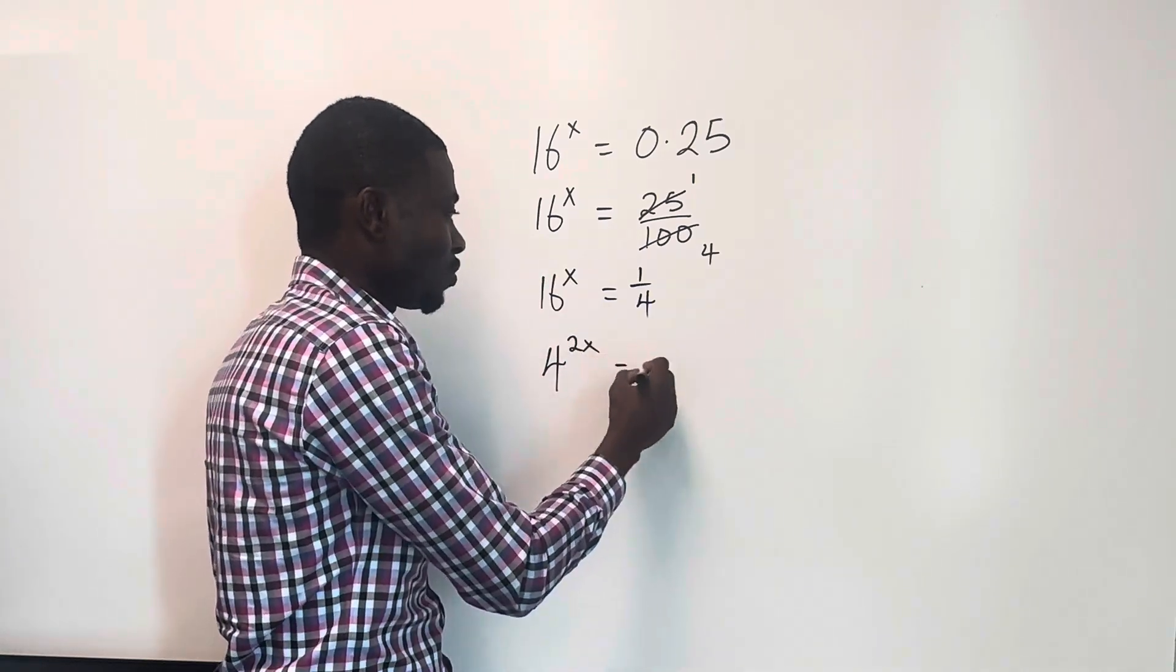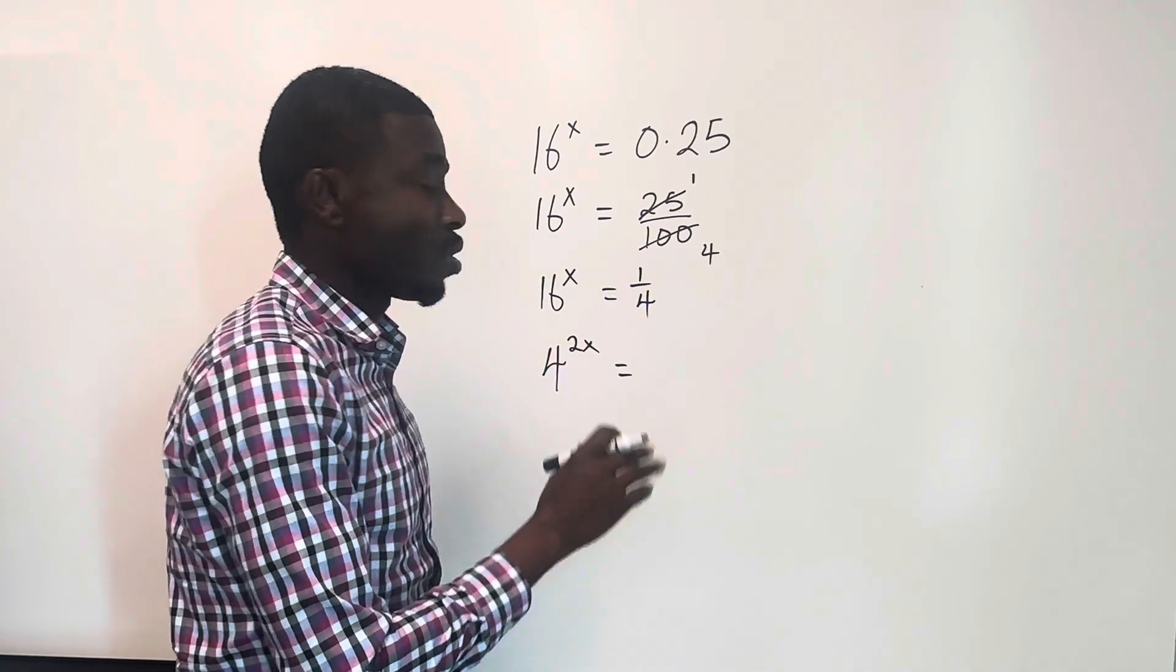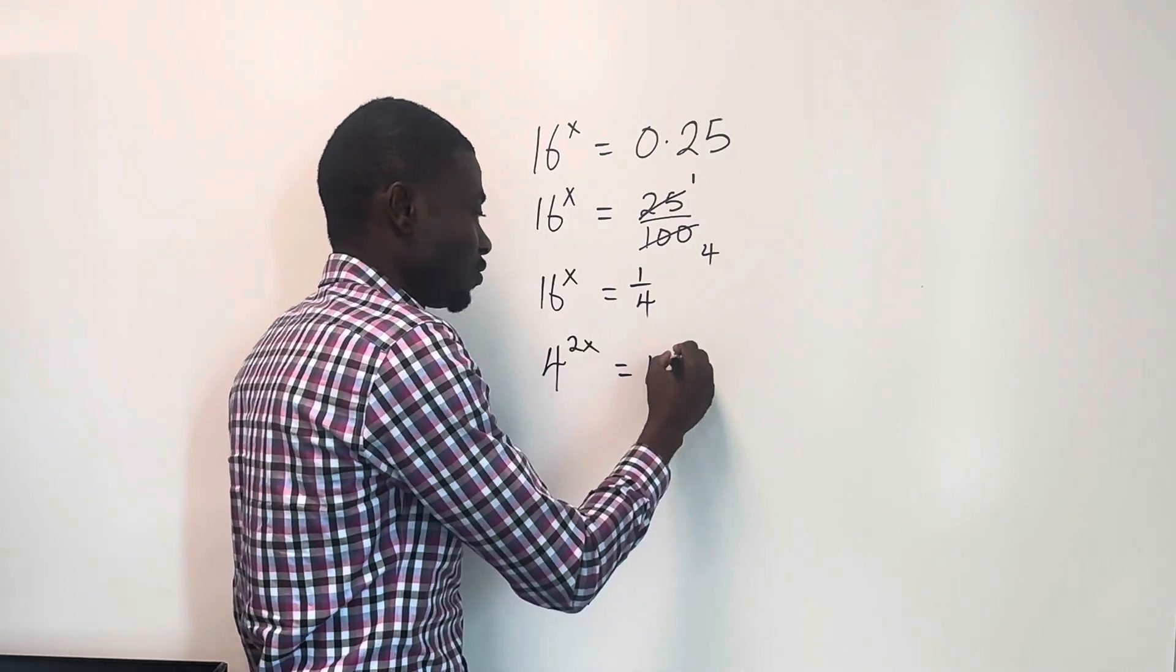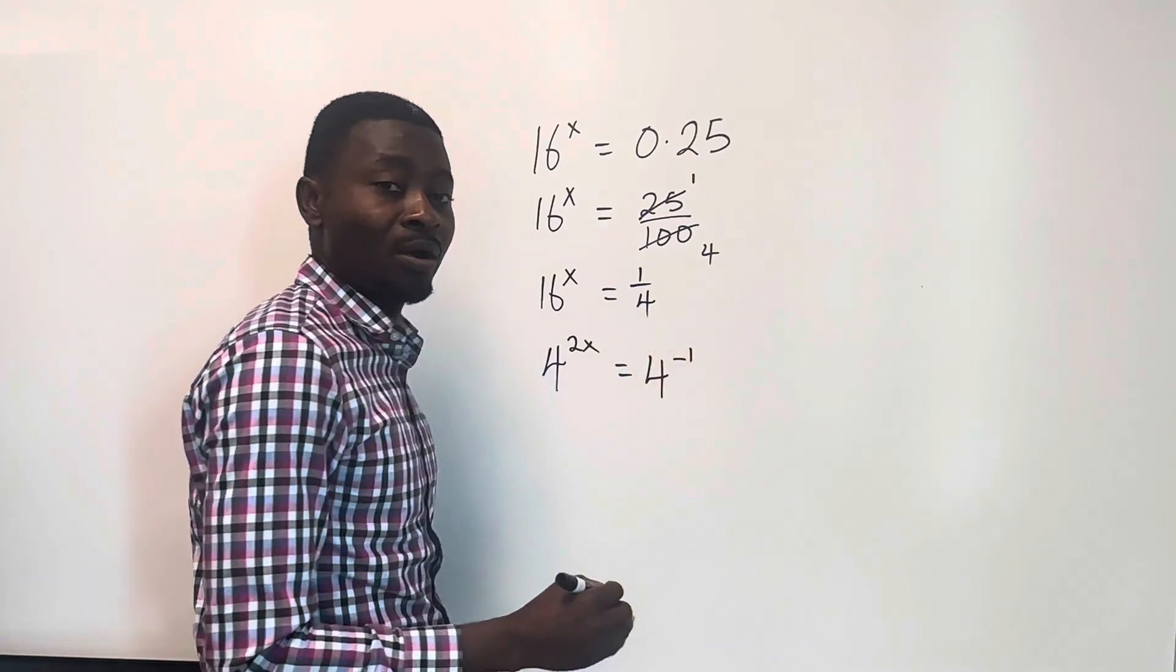So raised to the power of... we have the x here. Now, it equals to... Now, we have 1 over 4. 1 over 4 is still the same thing as 4 raised to the power of negative 1.